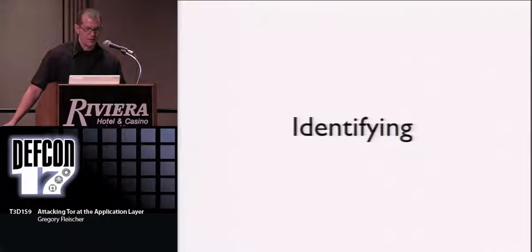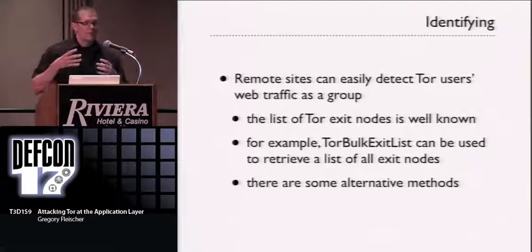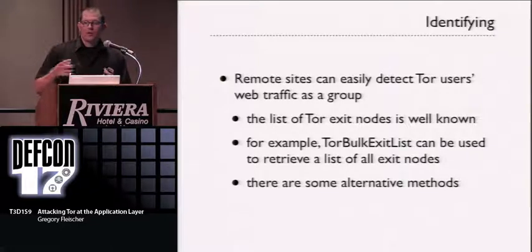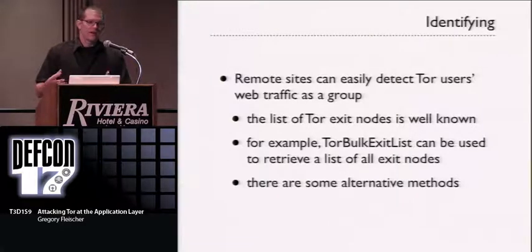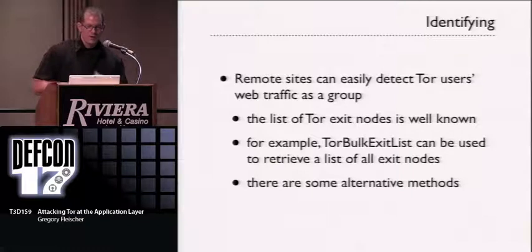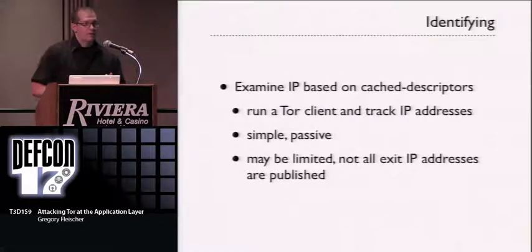Let's move on to the identifying stage. How do we detect Tor users as a group? When you visit a site using Tor you kind of stand out — in the global scope of the Internet, Tor users are a very small group. It's easy to get a list of IP addresses of all known Tor exit nodes — this is by design. The Tor bulk exit list can retrieve a large exit list. You can also run your own Tor client and collect the information yourself. Not all exit IP addresses are actually published — some nodes accept requests on one IP address but send traffic out on another.